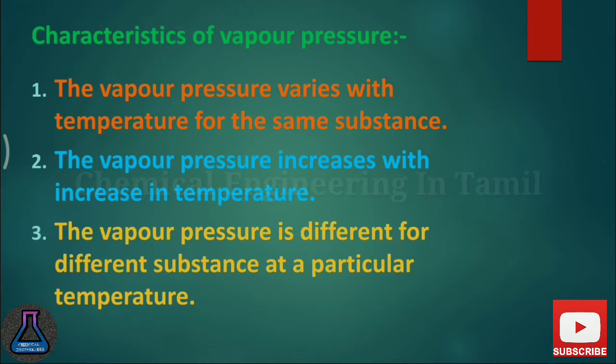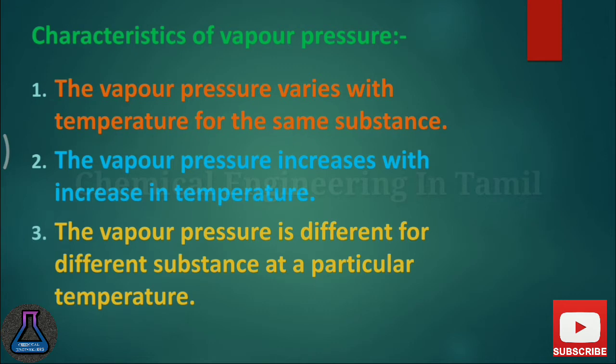The vapor pressure is different for different substances at a particular temperature. For a single substance, vapor pressure is unique at a particular temperature. For example, with water at 50 degrees Celsius, the vapor pressure is around 350-380 mmHg. At 450 mmHg and above, if you increase the temperature, you will get a higher vapor pressure.